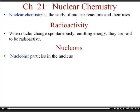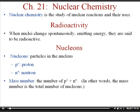Nucleons are the particles found in the nucleus — protons, which have a positive charge, and neutrons, which are neutral. The mass number of an element is the total number of protons and neutrons in the nucleus, i.e., the total number of nucleons. We don't need to worry about electrons changing the mass, because electrons weigh much, much less than protons or neutrons.